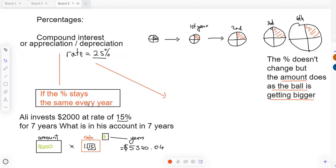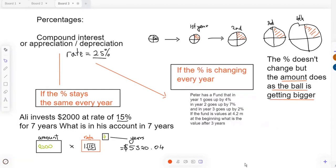So that's the one where the percentage stays the same. I'll do in a minute, I'll come back and do one where we're depreciating if something's going down, like a fund or a car is depreciating or something like that. But let's look at the one over here where the percentage is changing every year.